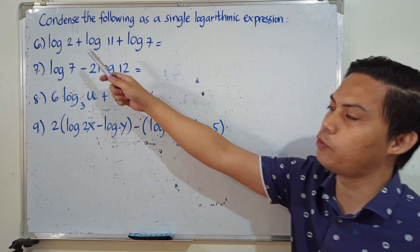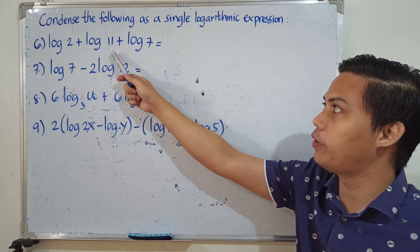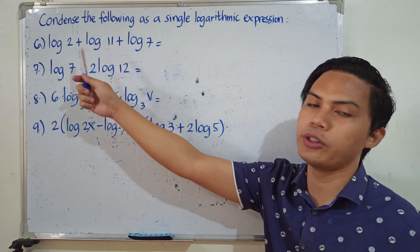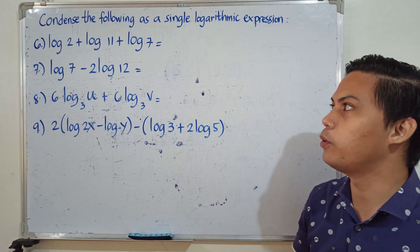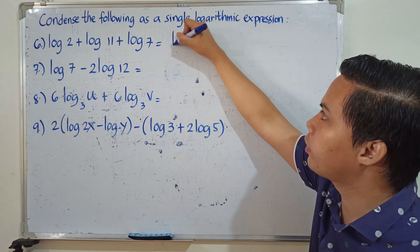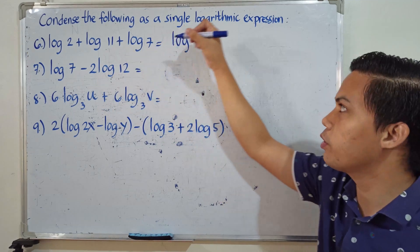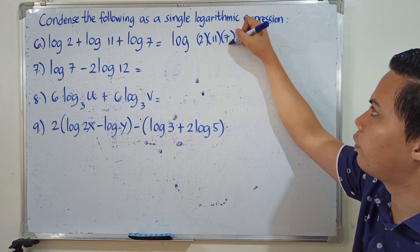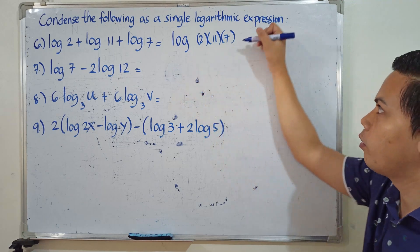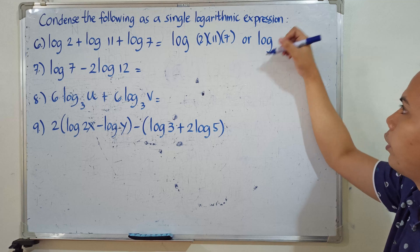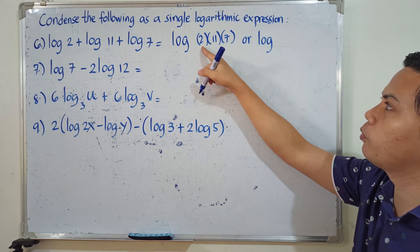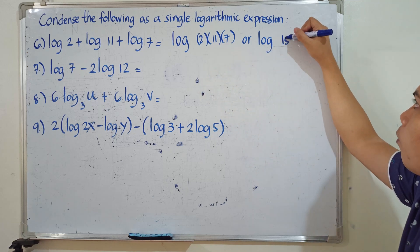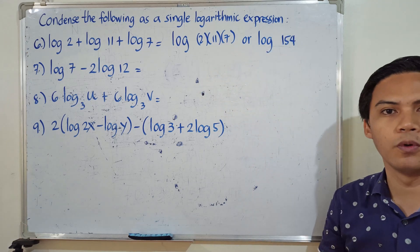Number 6: the logarithm of 2 plus the logarithm of 11 plus the logarithm of 7. Since the operation is addition, we apply the product rule. It becomes the logarithm of 2 times 11 times 7, with base 10. You can simplify further: 2 times 11 is 22, and 22 times 7 is 154. So the final answer is the logarithm of 154.